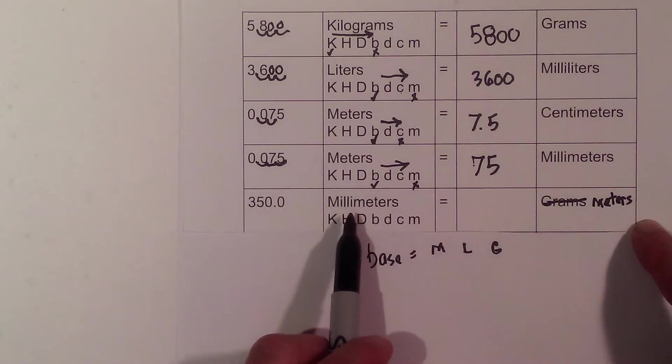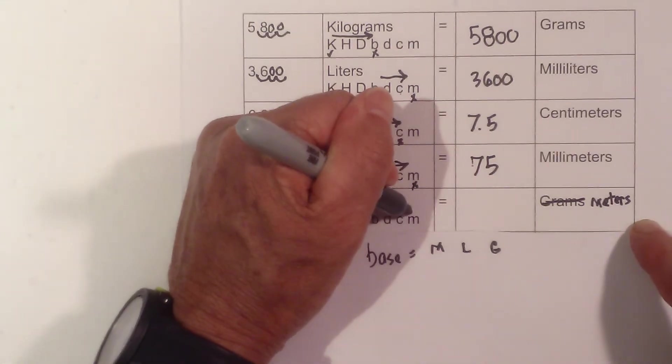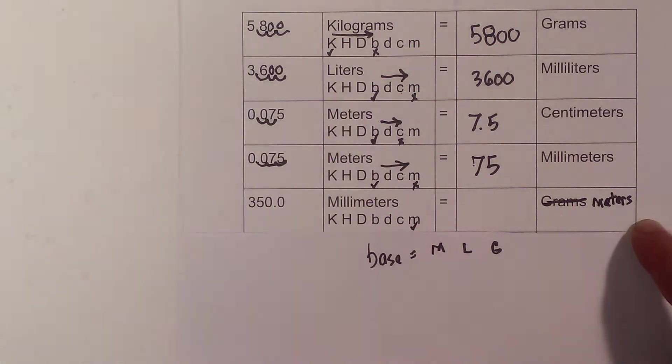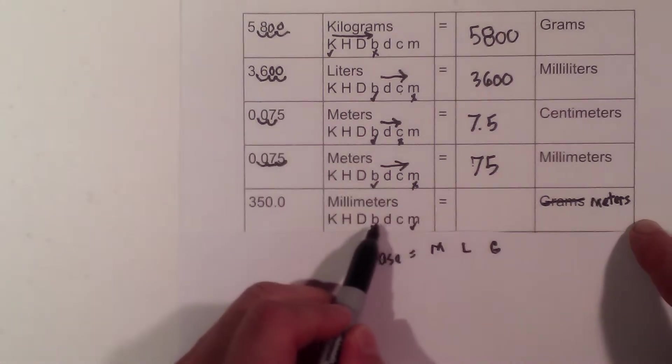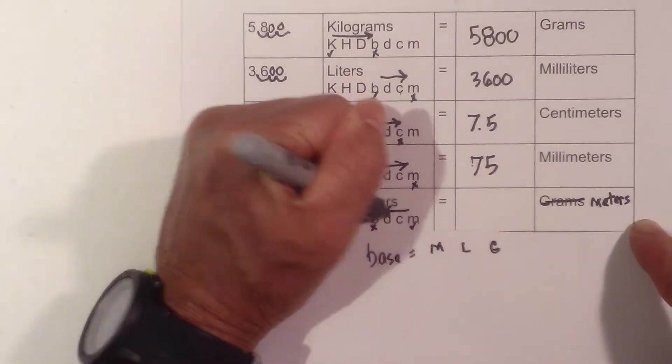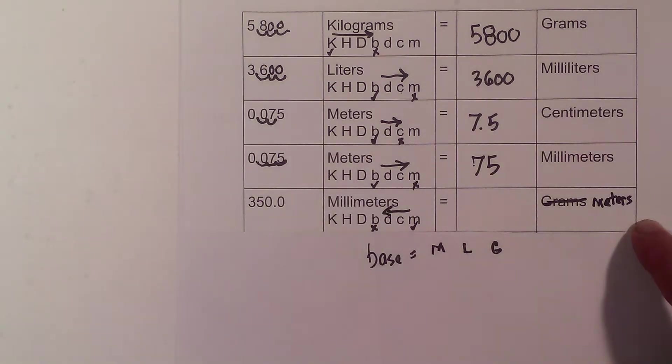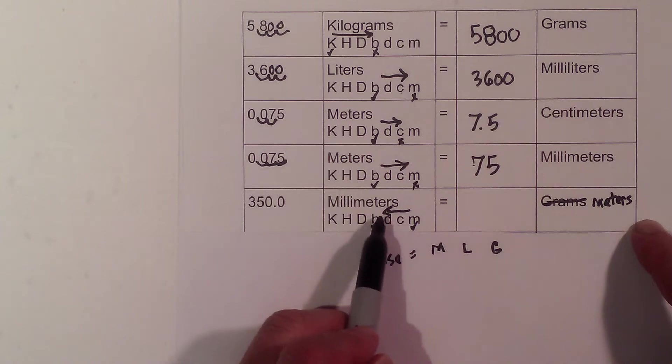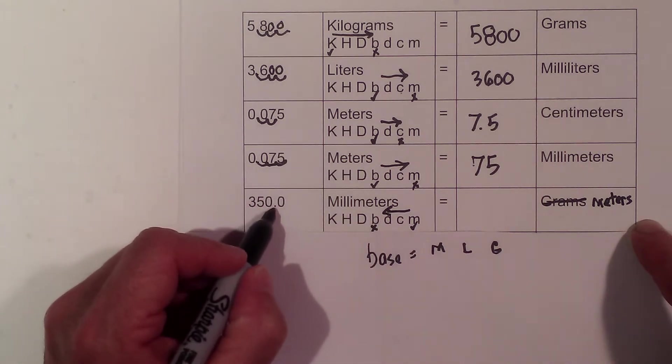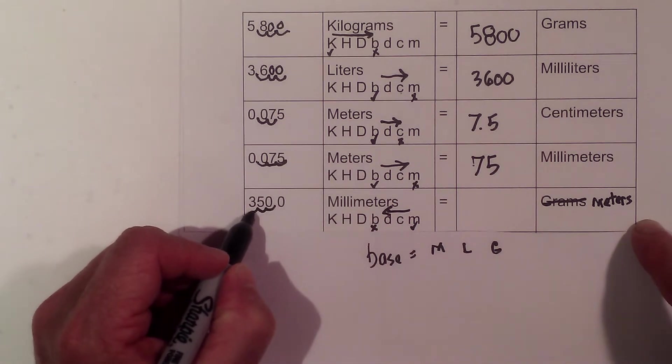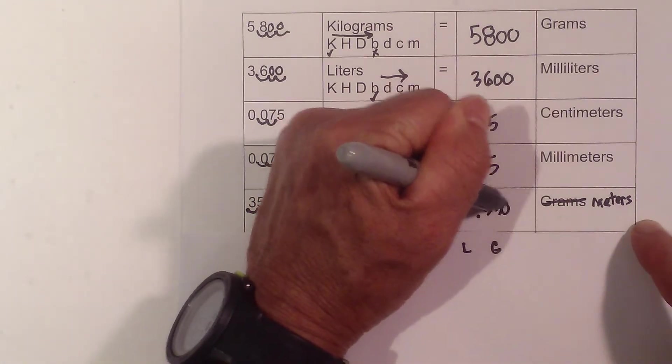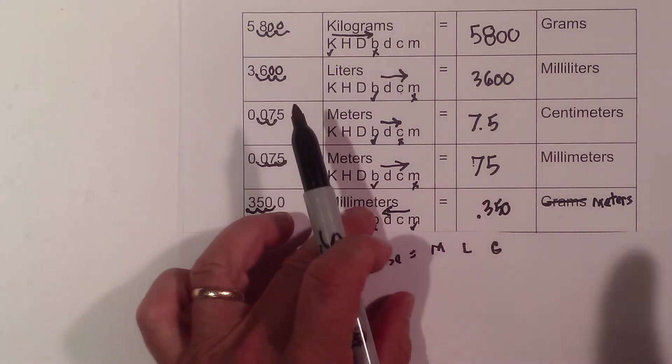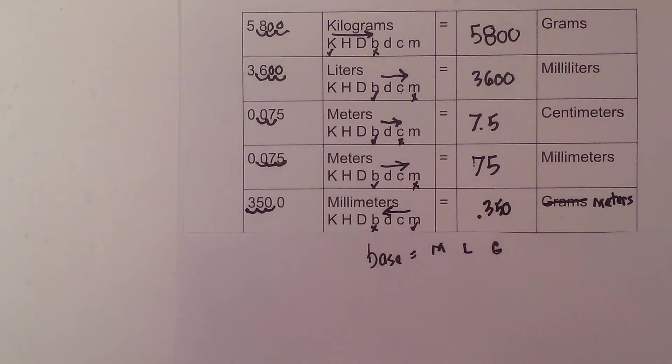So we're going to meters. I start at millimeters—let's put a check at millimeters. I'm going to meters, so this time we're going opposite. I go from check to X always, from start to finish. I count one, two, three, so it will be one, two, three, which is 0.350 meters.